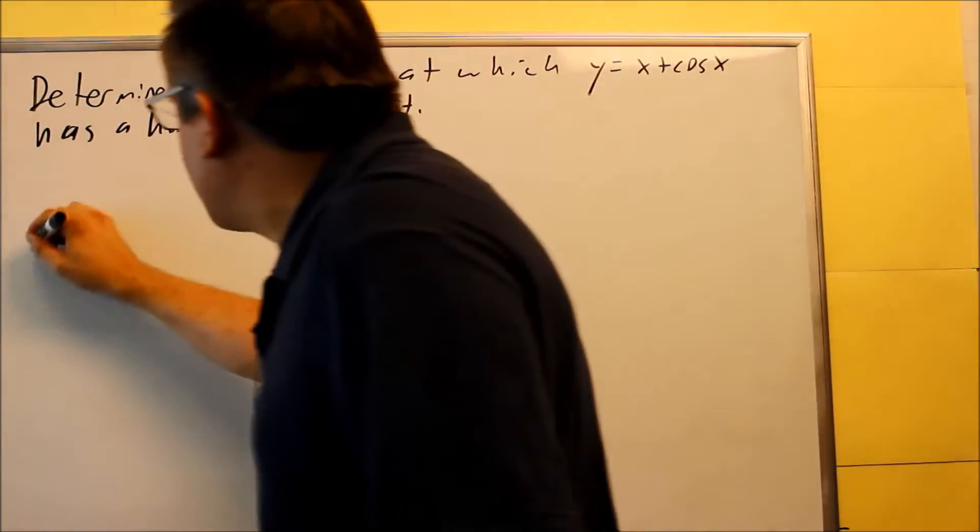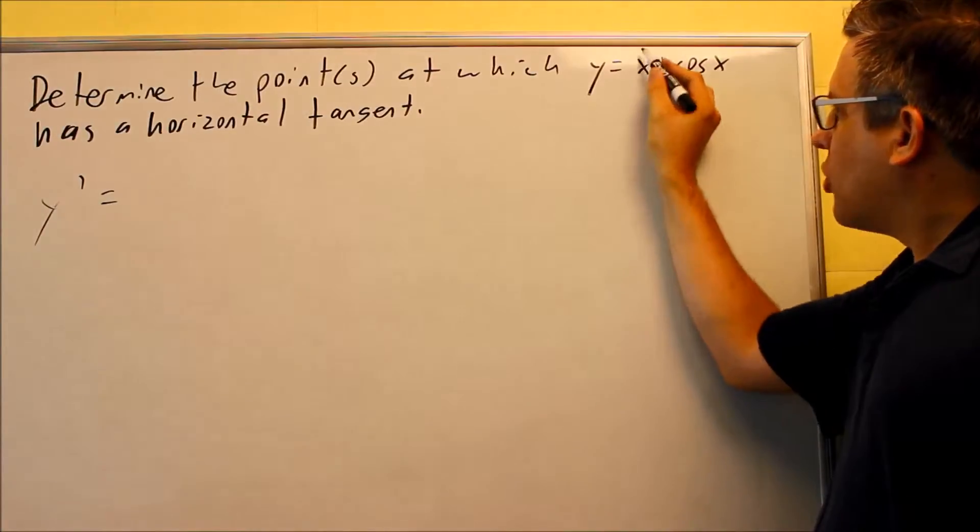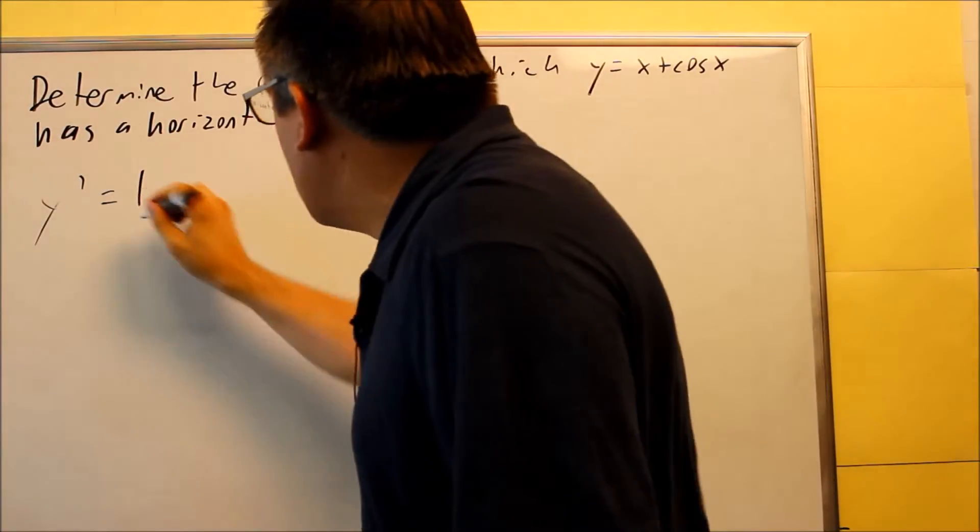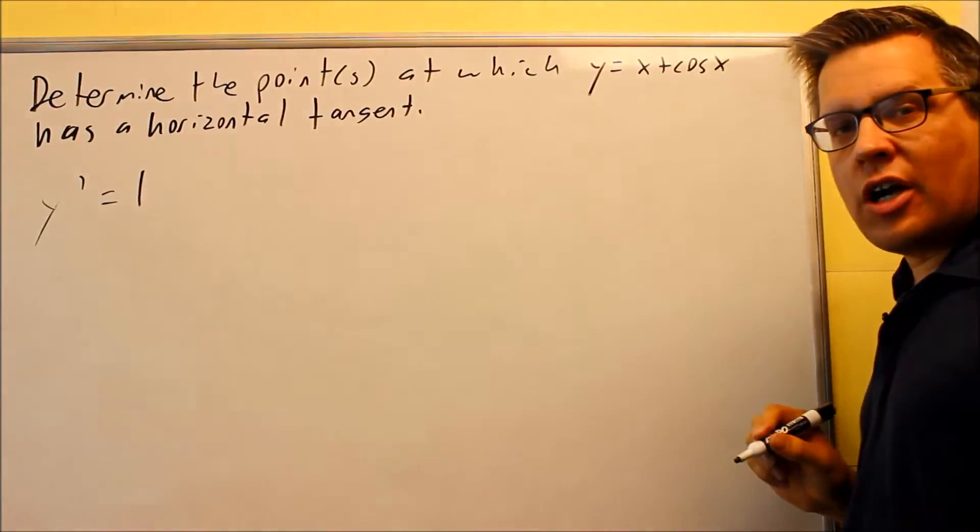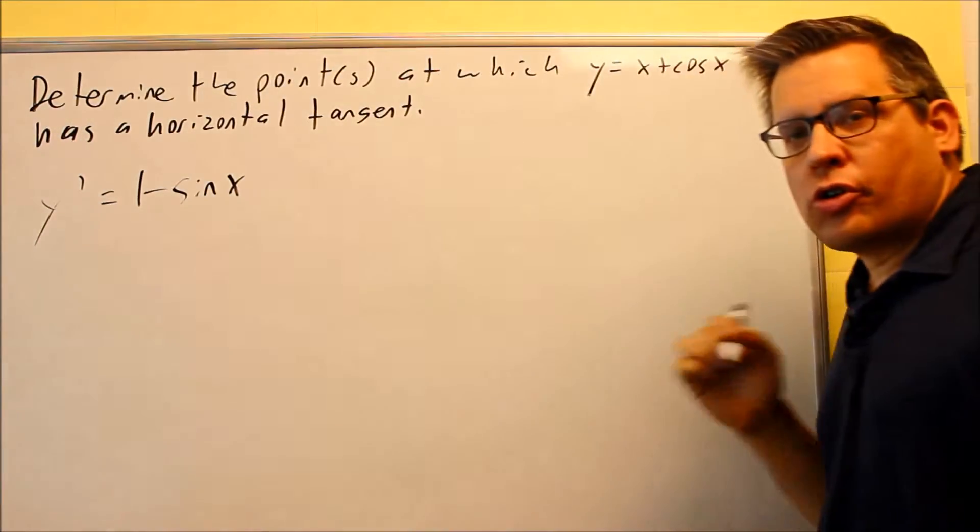First, let's find y-prime. The derivative of 1 times x is just 1. The derivative of cosine is negative sine x, which we talked about earlier in this section. So y' = 1 - sin x.